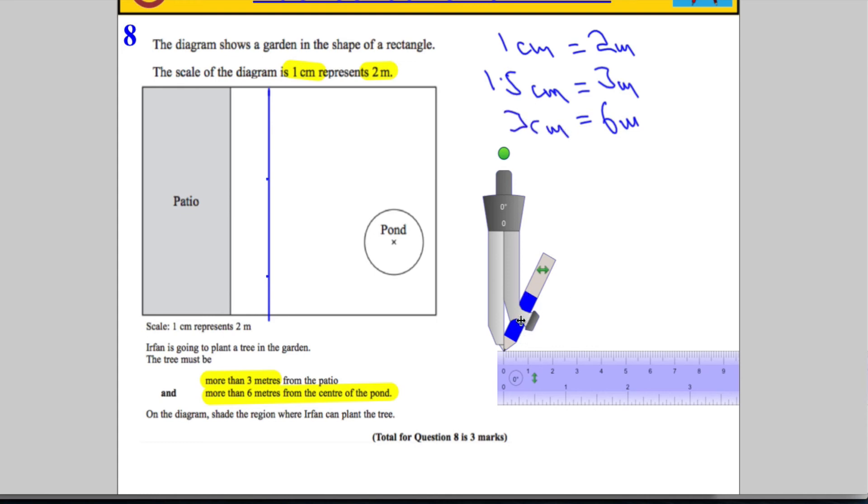So what I'm going to do is set my compass, using the ruler, to 3 centimeters. I'm going to take it over to where the center of the pond is and draw an arc. I'm going to draw an arc like so.